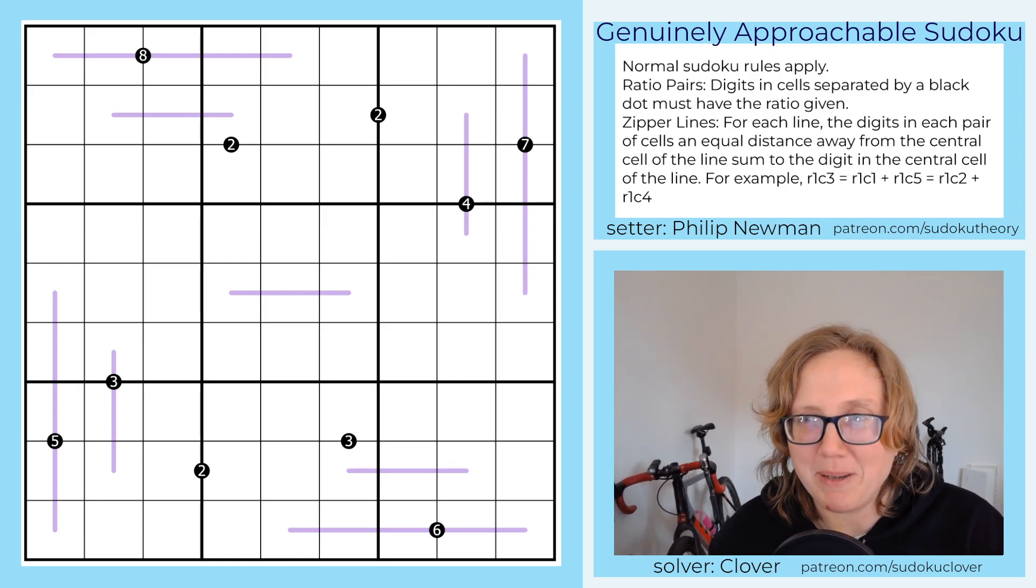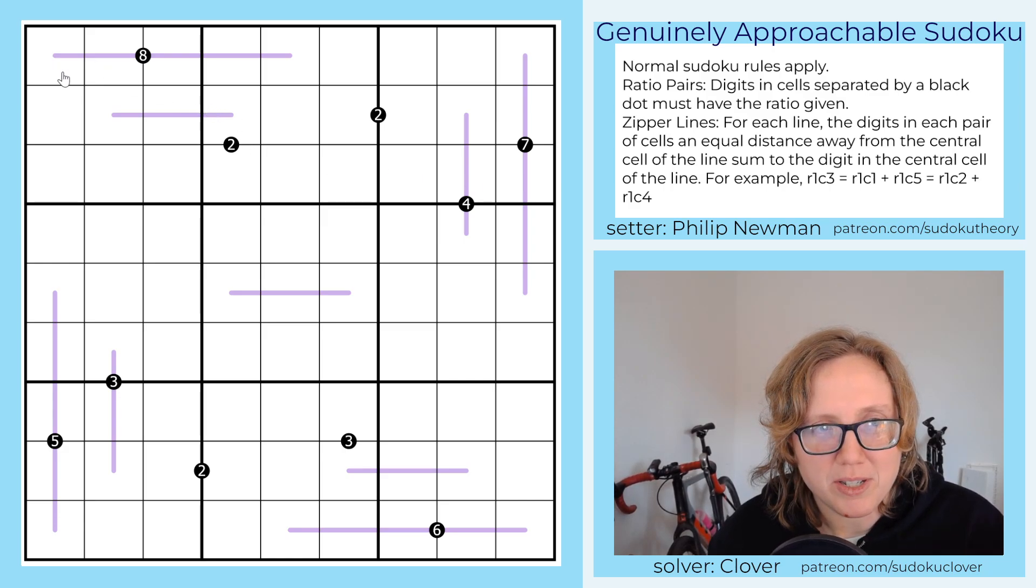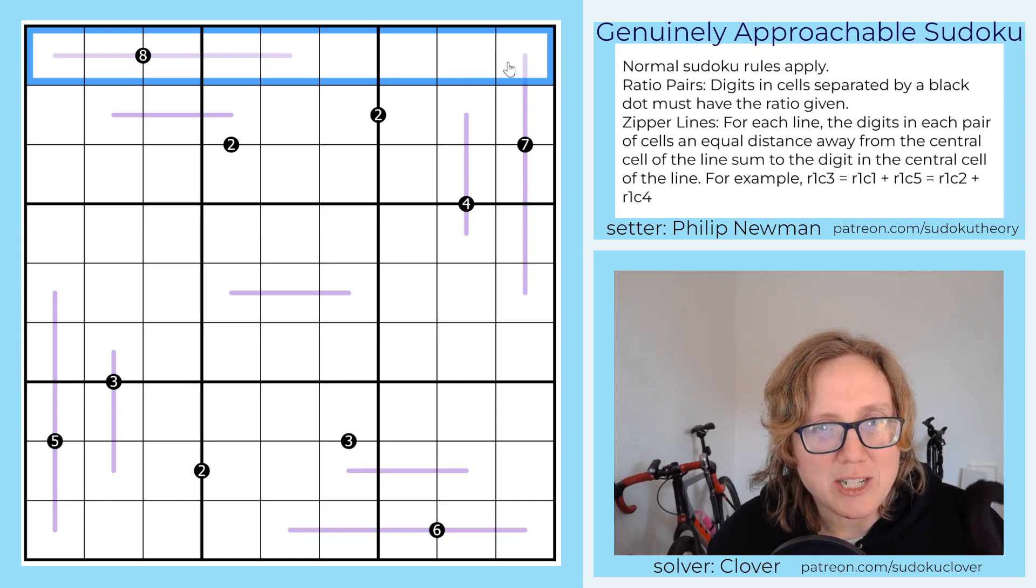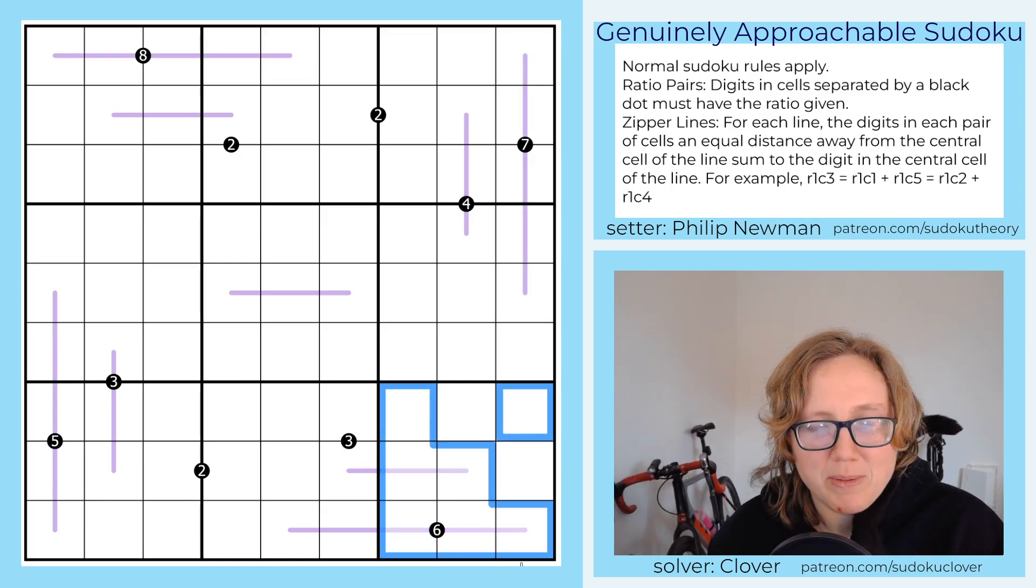So today what do we have? We have a Sudoku called Pepper Lines by Philip Newman and we have normal Sudoku rules. So this is going to mean digits one through nine in each row, each column, and each marked three by three region.